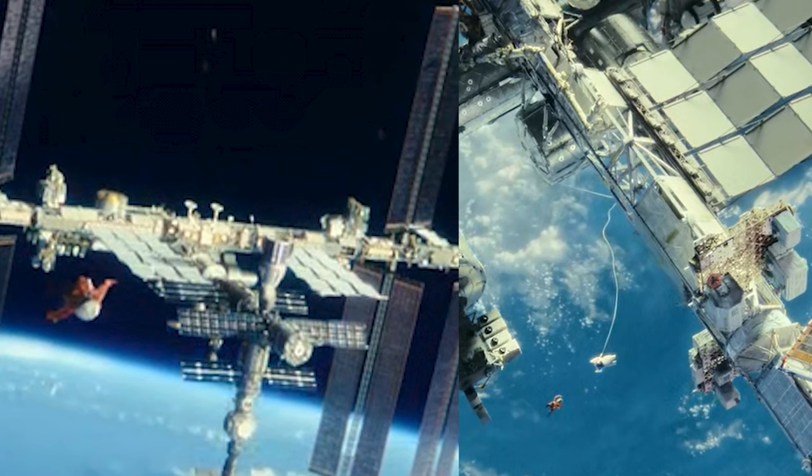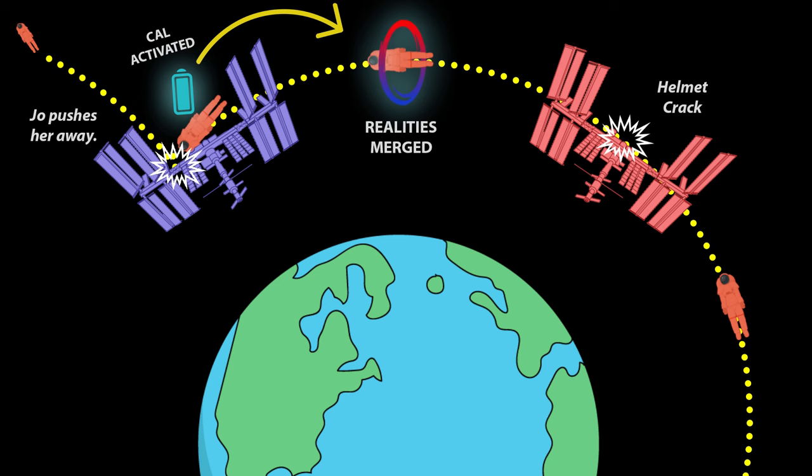We saw the Red ISS get hit, causing the face mask crack, causing the accident on the Red ISS, causing Joe's death. At this point, the dead cosmonaut is flying through space, moving pretty quick. And this is where the theory comes in.